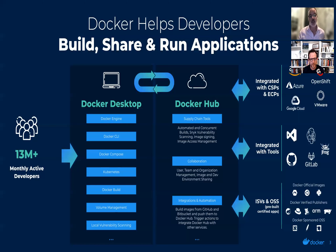Docker Hub is a service for finding and sharing container images with your team. It has content from community developers, open source projects, and independent software vendors. Official images are curated by Docker, over 140 repositories, providing essential base operating systems, middleware, and databases such as Ubuntu, NGINX, Node, Alpine Linux, and Redis. Official images exemplify best practices and ensure security updates are applied in a timely manner. Docker verified publisher images are those where we've formed relationships with ISVs, ensuring developers can trust the provenance and security of hundreds of commonly used applications.